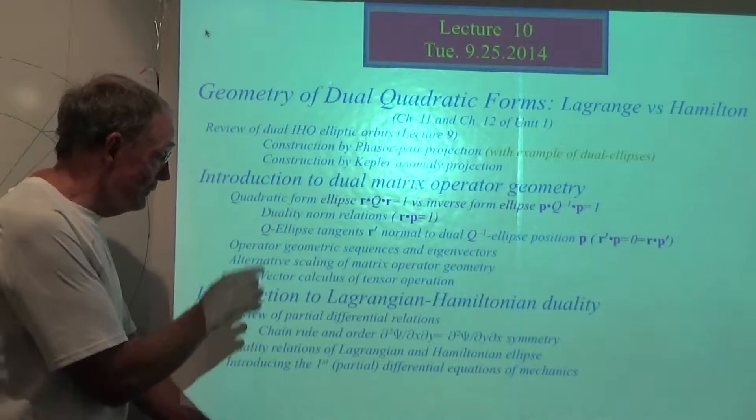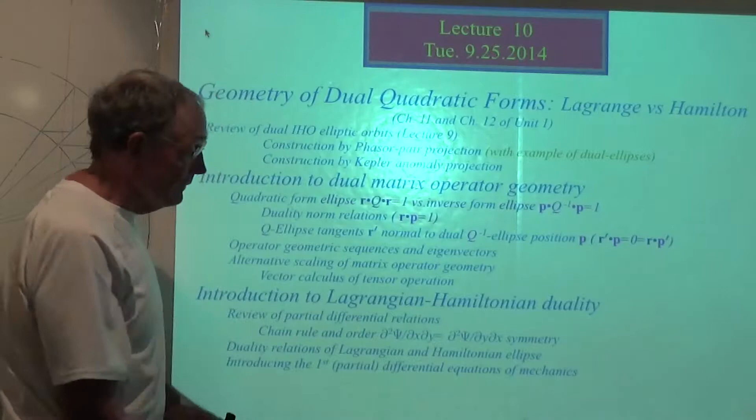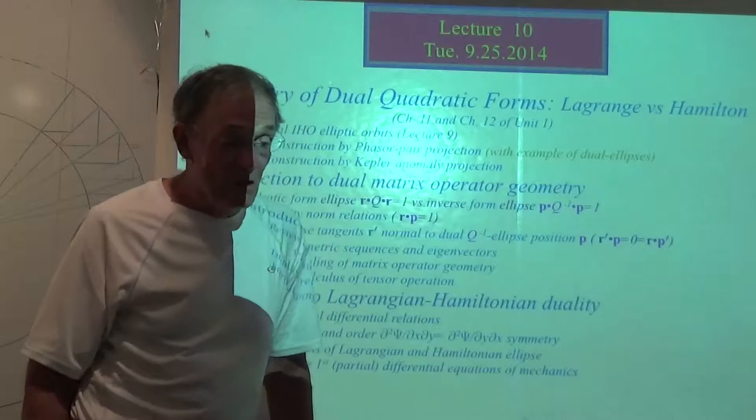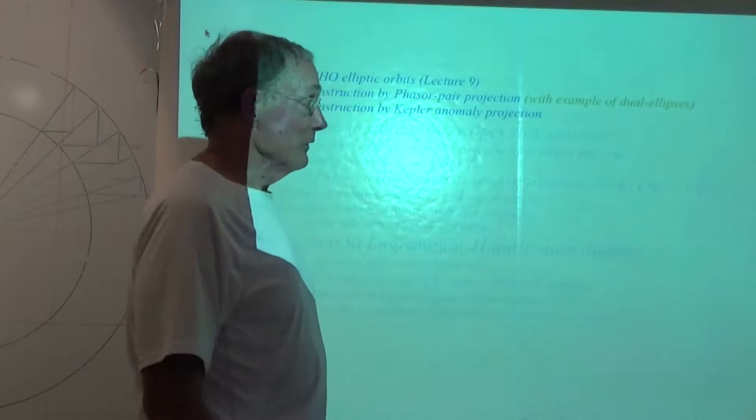One thing to review is what a partial differential relation amounts to, and why you can switch the order of differentiation of functions of two or more variables. So what we're looking at first is phasor-pair production with an example of dual ellipses.